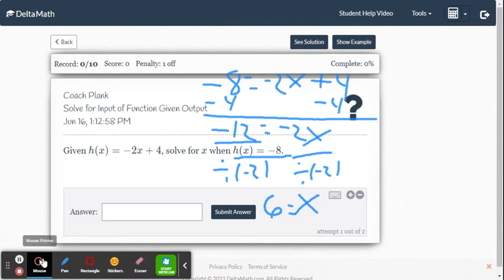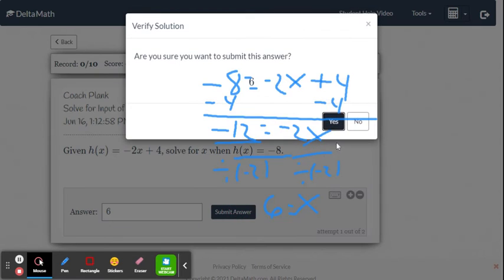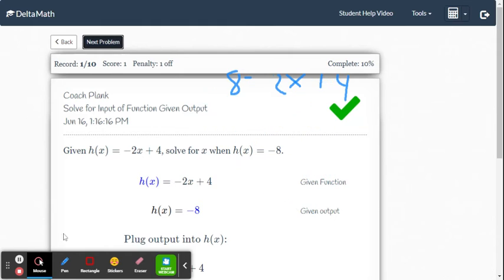Let's substitute that into Delta Math and see if that is correct. We don't write x equals, we just write 6. Submit and we get the check mark.